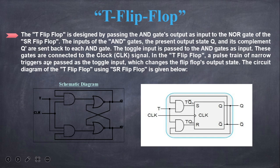Next, the T flip-flop is designed by passing the AND gate's output as input to the NOR gate of the SR flip-flop. The inputs of the AND gates, the present output state Q and its complement Q, are sent back to each AND gate. The toggle input is passed to the AND gates as input.